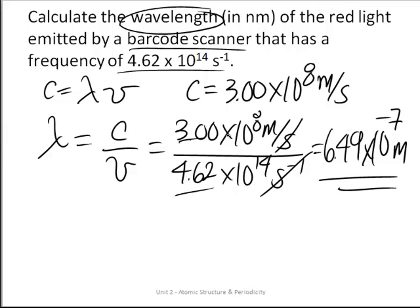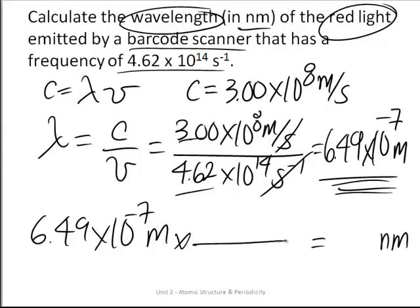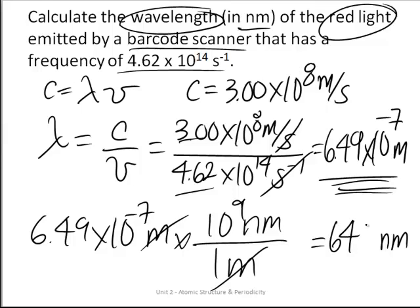Because this is in the visible spectrum—red light—it's often reported with units of nanometers for convenience. It's cumbersome to say 6.49 × 10^-7 meters all the time if you're discussing visible wavelengths of light. So we're going to convert 6.49 × 10^-7 meters into nanometers. We know that the conversion factor is 1 meter equals 10^9 nanometers. The meters are going to cancel out, and so we get a value of 649 nanometers as a wavelength for this barcode scanner.